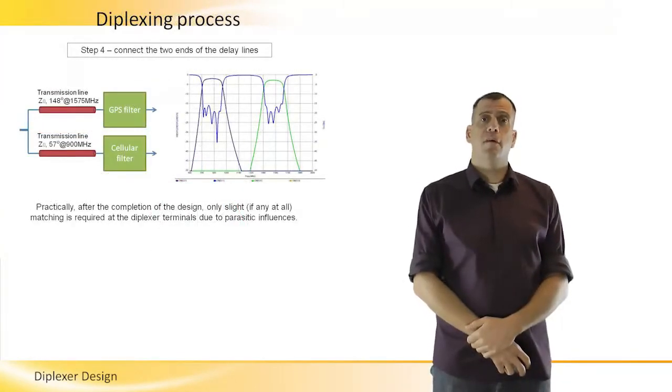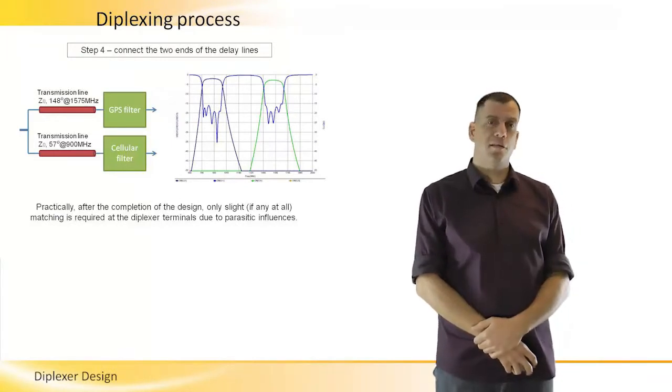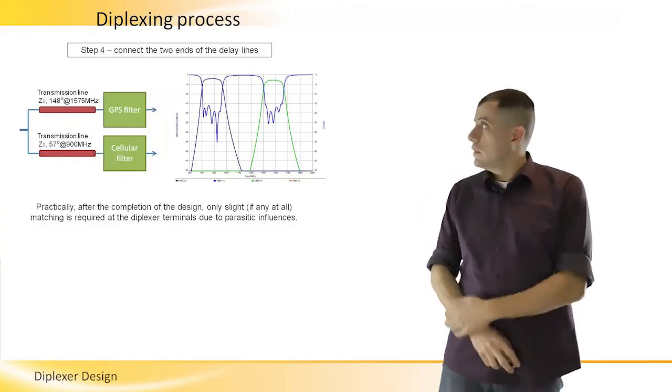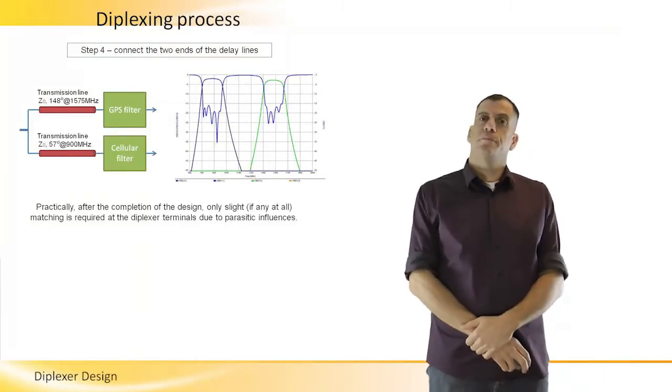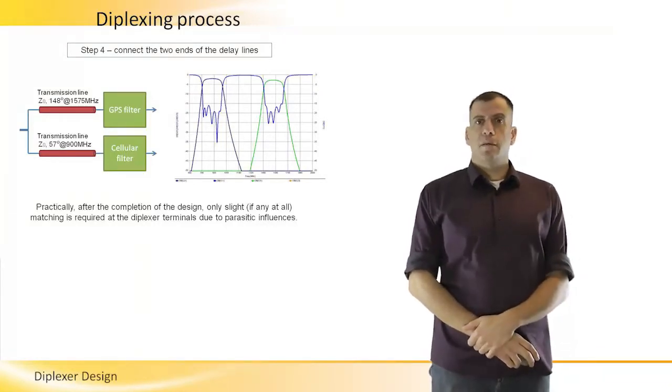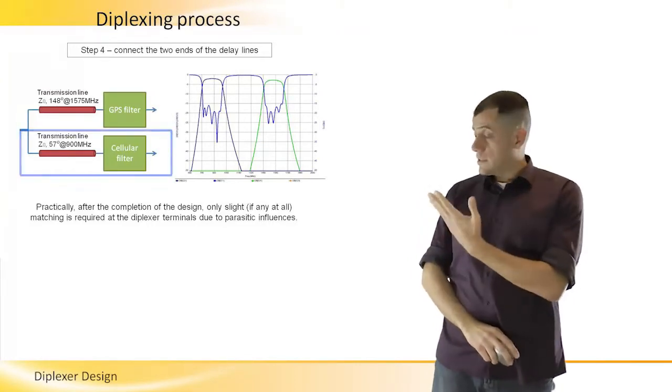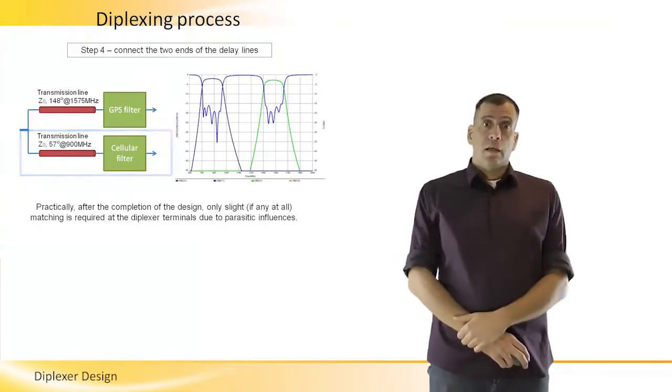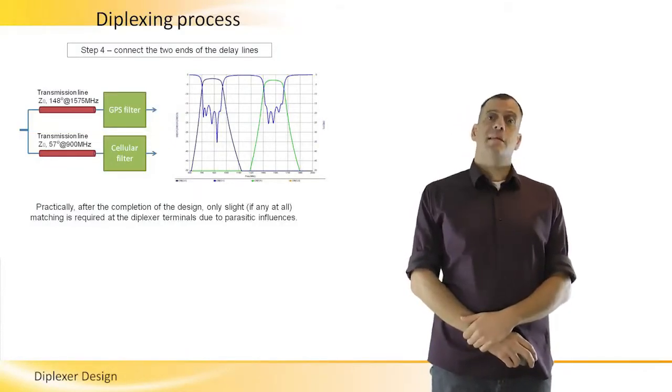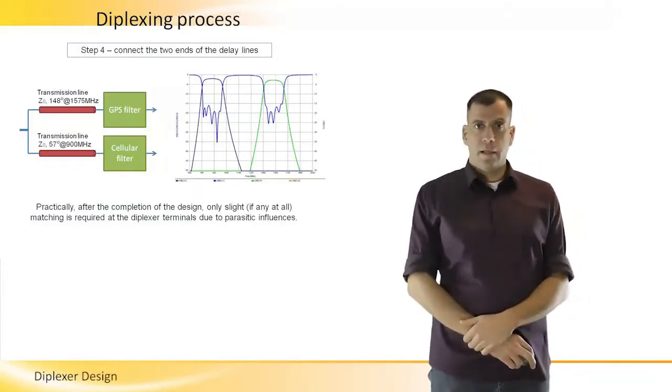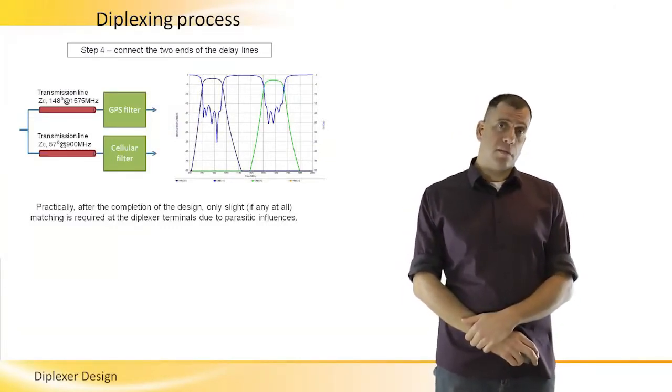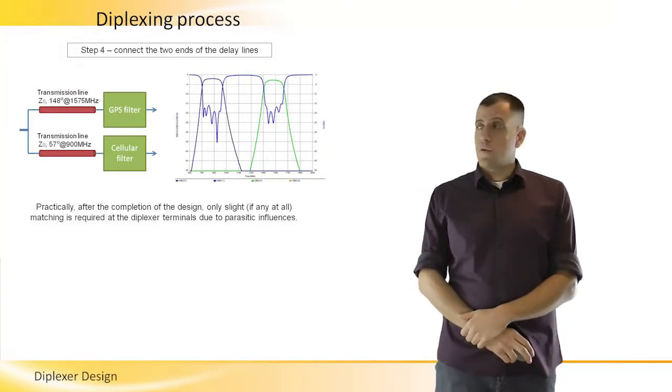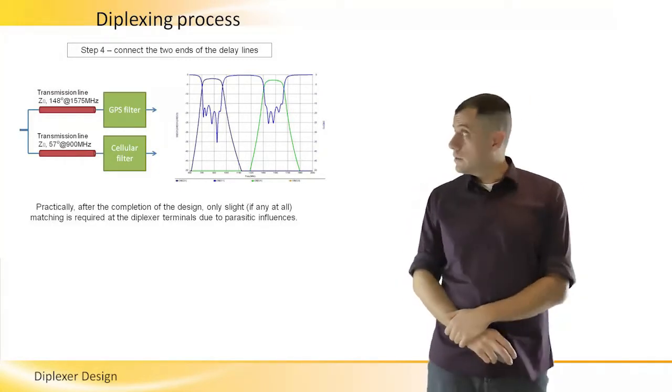Now, all we have left is to connect the two filters and their delay lines together. If we design properly, we won't have to do anything further. You can see here how the diplexer is nicely matched. Why does it work? Because if we look at the cellular band, where the cellular filter has an impedance of approximately 50 ohm, we have designed the delay line on the GPS side that will reflect infinity from there. And 50 ohm in parallel to infinity, it's still 50 ohm. So we have it still matched after we connect the two filters.